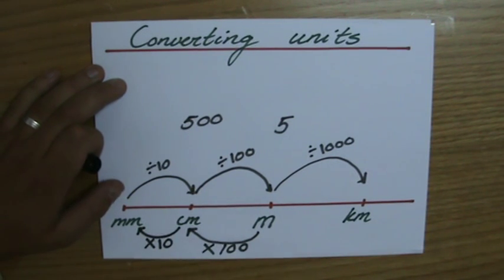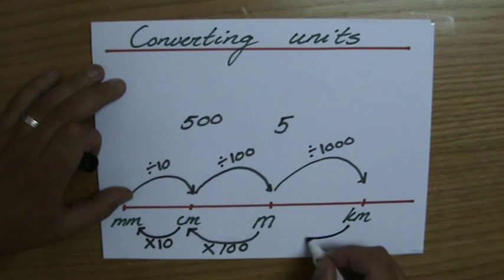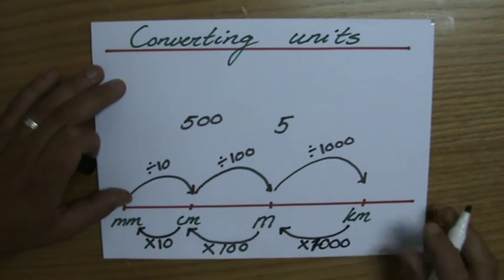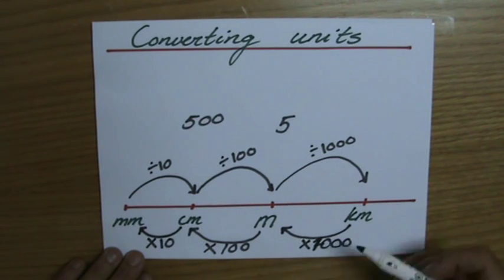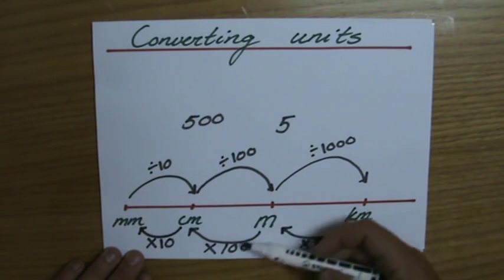10—1 times 10. And 4 kilometers are 4000 meters, so you times it by 1000. So divided by 10, 100, 1000; times by 1000, 100